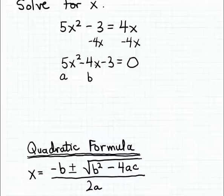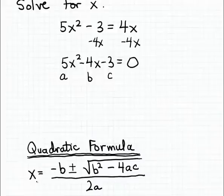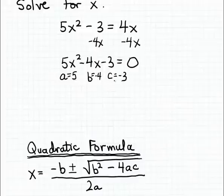You need the second coefficient, usually labeled b — that's the coefficient of the x to the first power term. And then the constant coefficient, usually labeled c. If you can identify those three coefficients, you can substitute them into the quadratic formula, which will generate the solutions. Remember, there may be as many as two solutions to a quadratic equation. In this example, it's easy: the leading coefficient a is 5, b is minus 4, and c is minus 3.